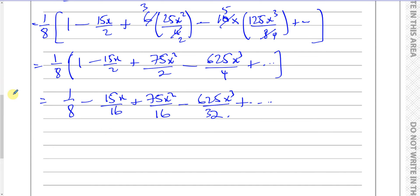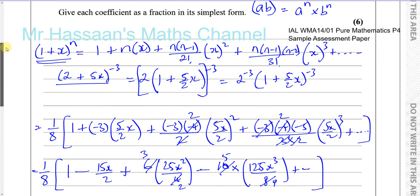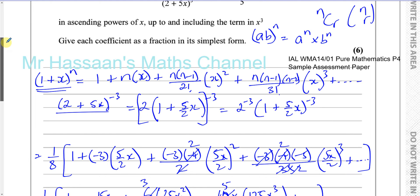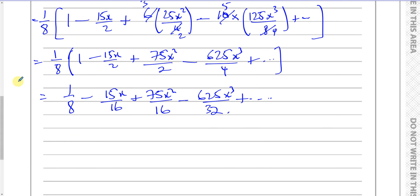That is our answer to this question. We've expressed this up to and including the term in x cubed, with each coefficient as a fraction in its simplest form. Sometimes they ask you to write down only the coefficient of x cubed or x squared — in that case don't write the x term next to it, just write the coefficient itself. For example, the coefficient of x cubed is −625/32. Be careful, as some students lose marks by writing the full expansion instead of picking out the specific coefficient asked for.